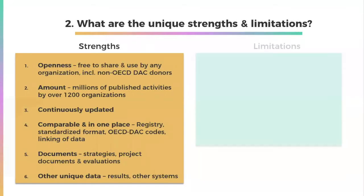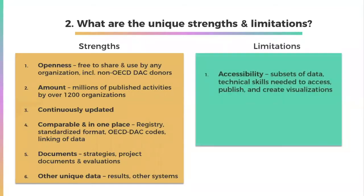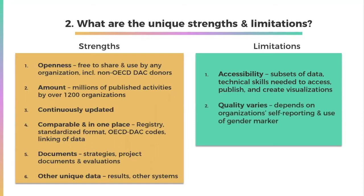IATI data has two main limitations. First, accessibility: while IATI data is made available through DPortal, the new IATI Query Builder, and the data portals of major donors, these often only offer a subset of the total dataset. As a result, large-scale analysis and access of some data can be challenging. You also need significant technical skills to access or publish IATI data and to create your own visualizations from it. Second, quality varies: just like with OECD DAC data, the quality of IATI data depends on organizations' accurate and consistent self-reporting, and it's difficult to verify whether organizations have correctly applied the gender equality policy marker.